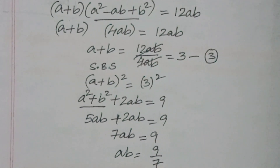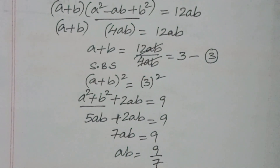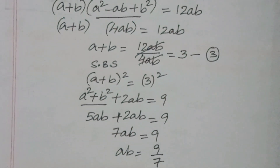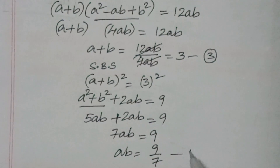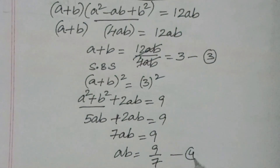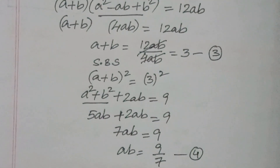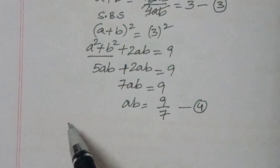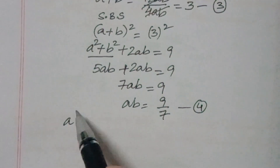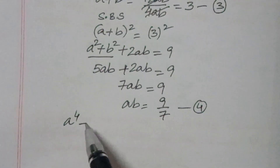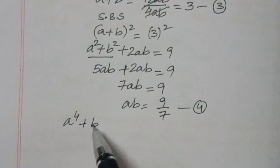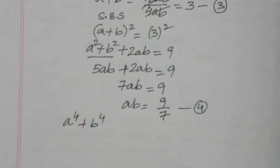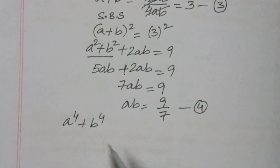So the value we have found is ab equals 9/7. Let this be equation 4. Now, what is required is a to the power of 4 plus b to the power of 4.